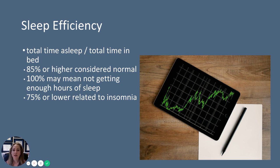Sleep efficiency is the total time of sleep divided by the total time in bed. When you go to bed normally it does take a little bit of time to fall asleep — you don't fall asleep or wake up instantaneously. So 85% or higher for sleep efficiency is considered normal. If you have 100% sleep efficiency — meaning as soon as you get in bed you're instantly asleep and instantly awake in the morning — that may mean you're not getting enough hours of sleep. It's actually not normal to have 100%.